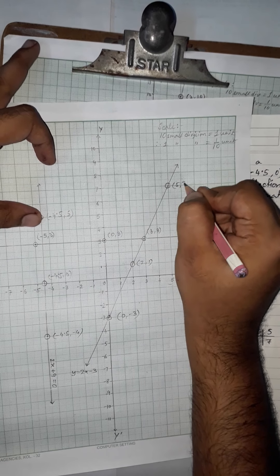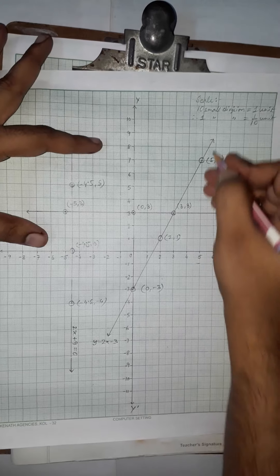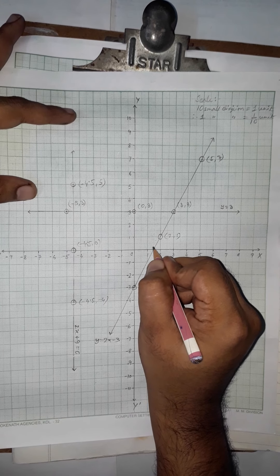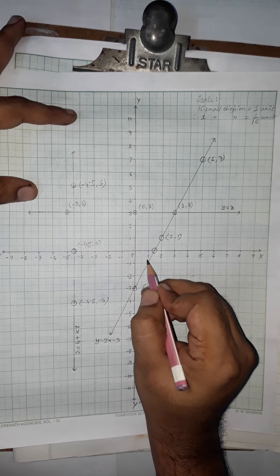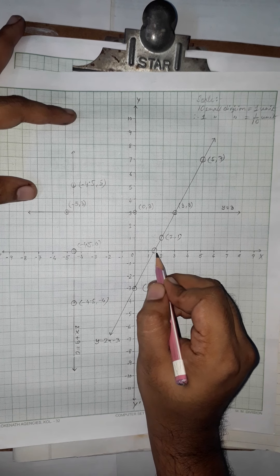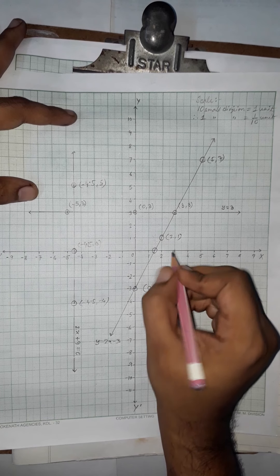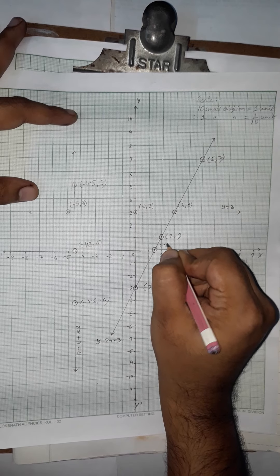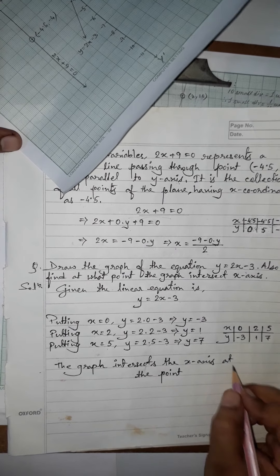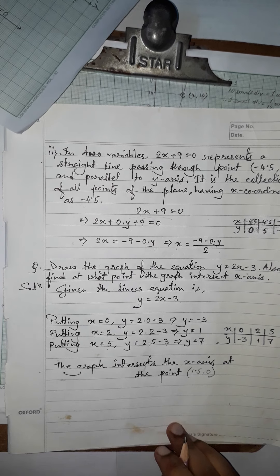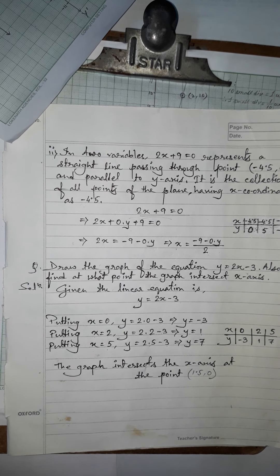Now the question also asks: at what point does the graph intersect the x-axis? The graph intersects the x-axis at the point between 1 and 2, which is 1.5. Since it lies on the x-axis, the y-coordinate is 0, so the coordinate is (1.5, 0). The graph of y = 2x − 3 intersects the x-axis at the point (1.5, 0). In the next video we will see a few more. Till then, Namasté.